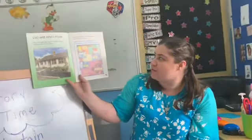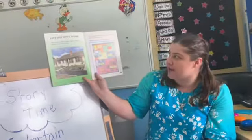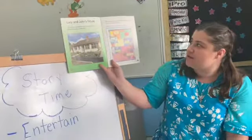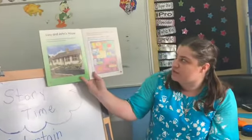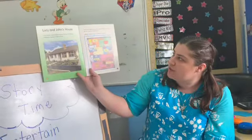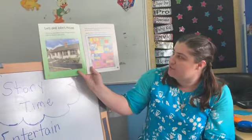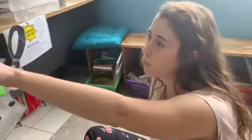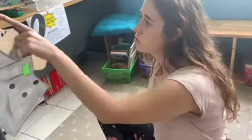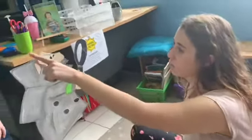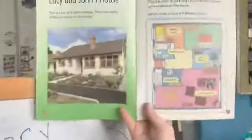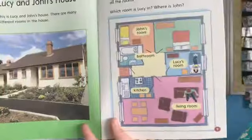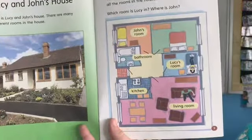This is Lucy and John's house. There are many different rooms. This is a map of Lucy and John's house — it shows all the rooms. Which room is Lucy in? Where is John? Lucy is in Lucy's room, and John is in the living room. He's sitting on the couch and she's on her bed.